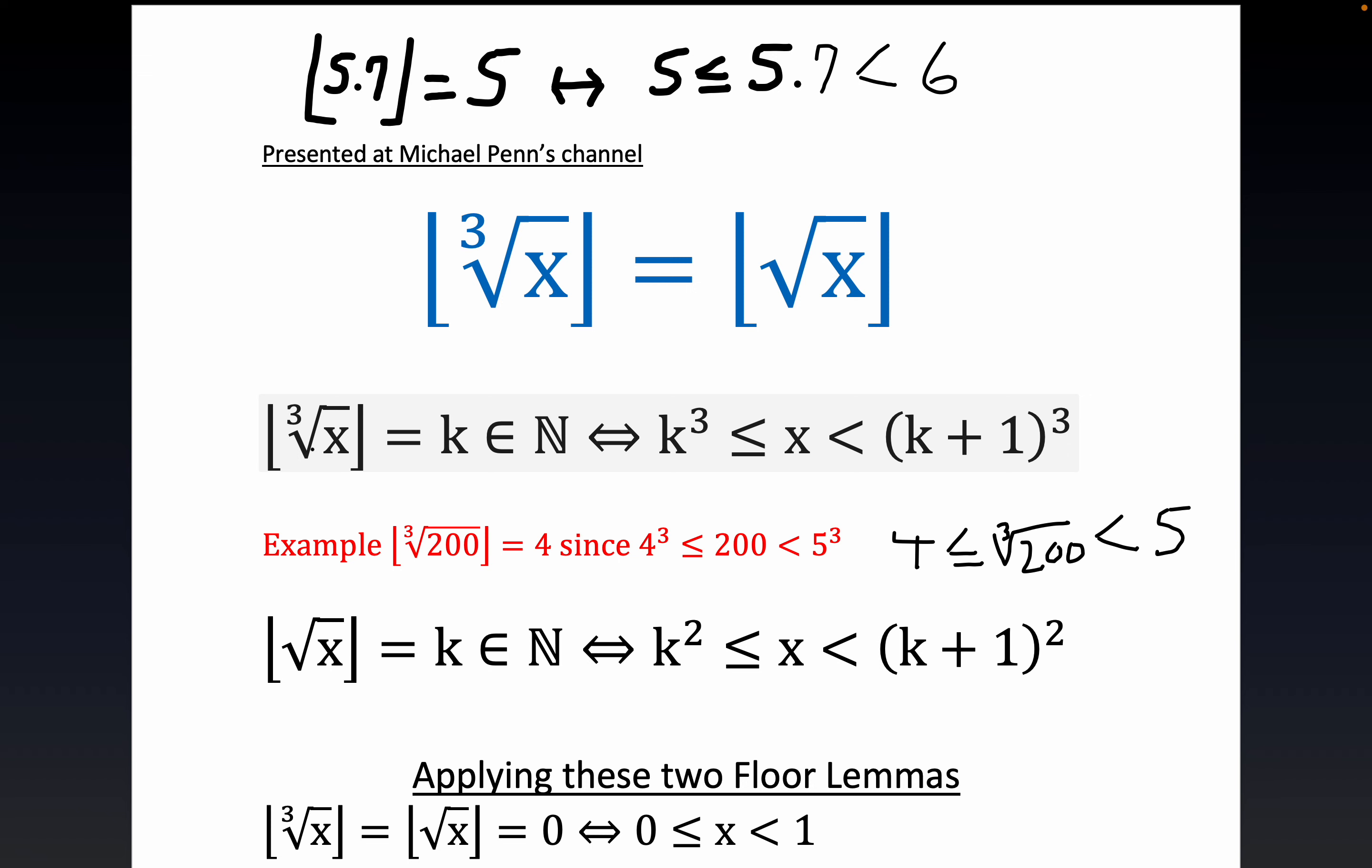And so we have established, hopefully you believe this lemma right here. Notice the connection, this is cube root and cubing, right? They're inverse functions. And there's an understood two right there. It gets left out a lot for square root, but there's an understood index of the radical of two, which explains this definition of what it means for K to be the floor of the square root of X.